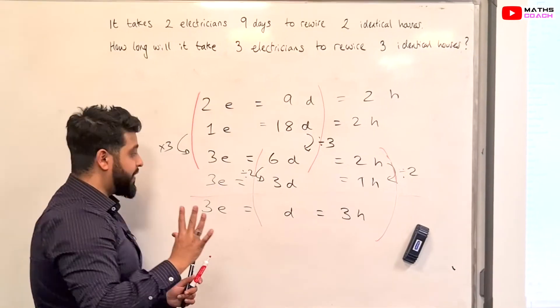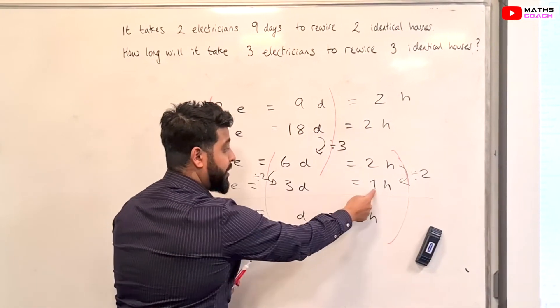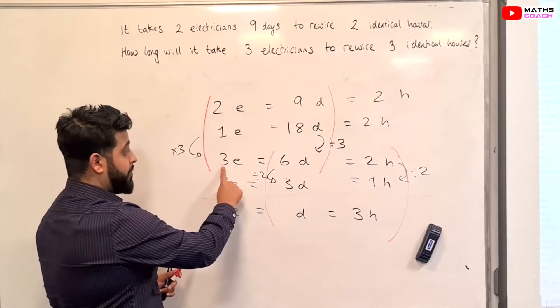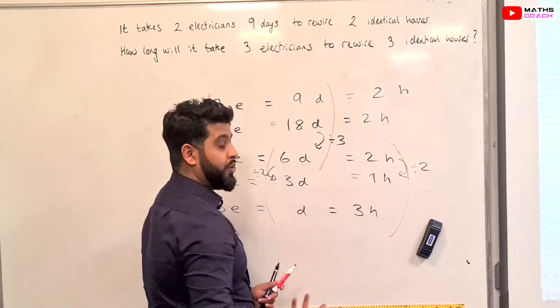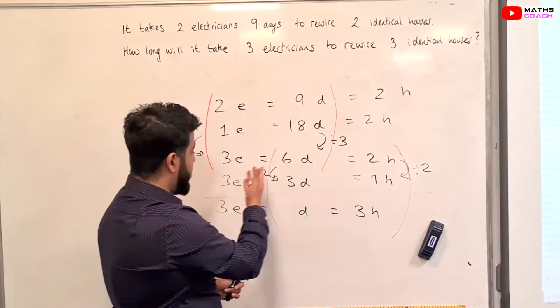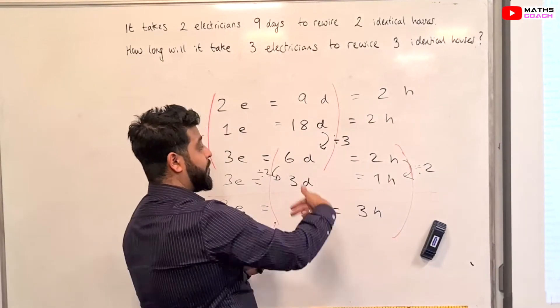So, let's have a final read of that now. It takes 3 electricians, 3 days to rewire 1 house, where it took the same number of electricians, 6 days to rewire 2 houses. Of course, if you're going to work on the same amount of electricians on more houses, it's going to increase.